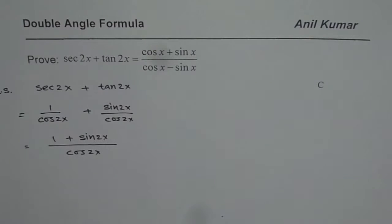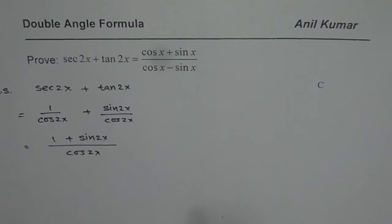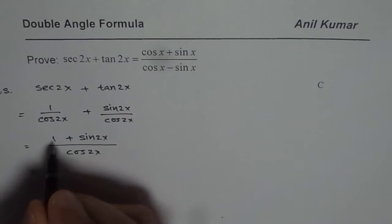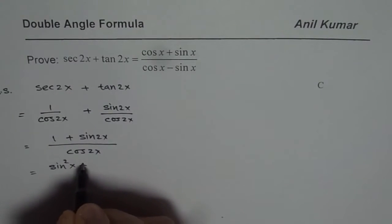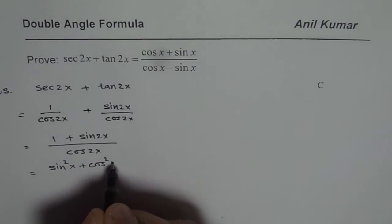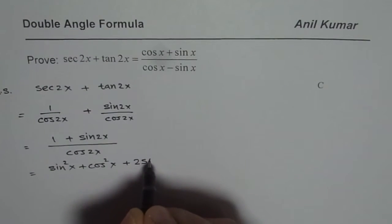Now what we will do is we can write 1 as sin square x plus cos square x. So 1 could be written as sin square x plus cos square x, and sin 2x can be written as 2 sin x cos x.